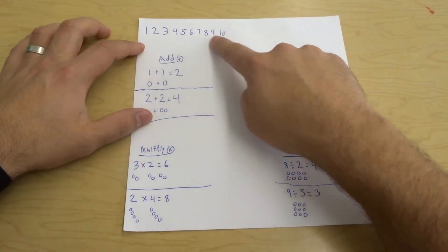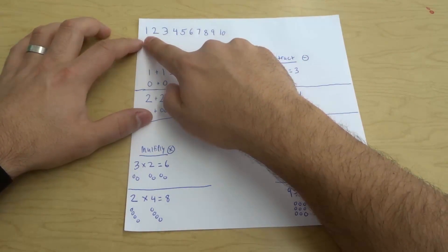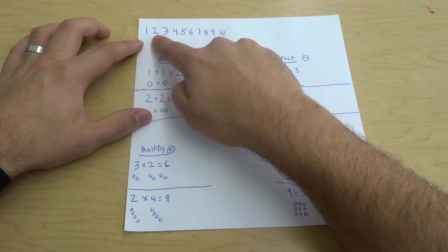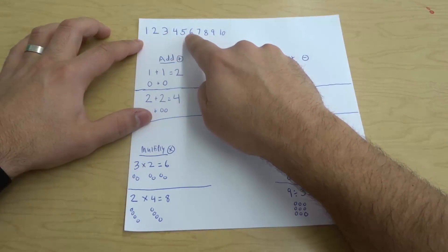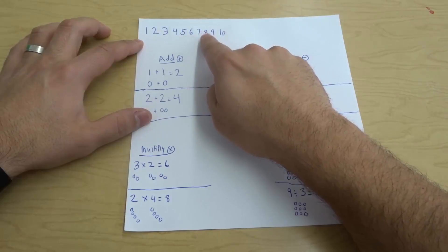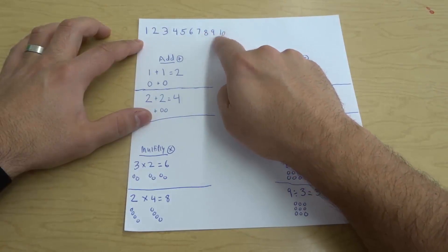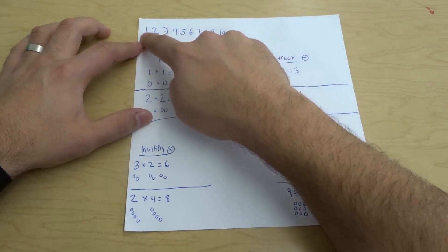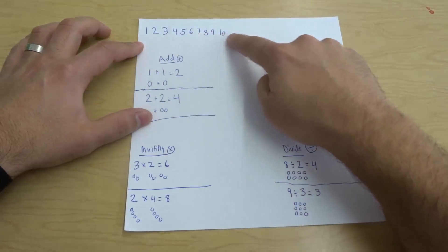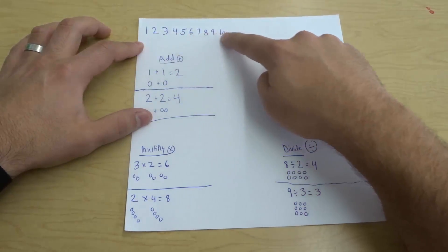Right here I've written the numbers 1 through 10. So when you count them, you should know the order: 1, 2, 3, 4, 5, 6, 7, 8, 9, 10. Now the numbers on this side are smaller than the numbers on this side, so it gets bigger when we go from left to right.